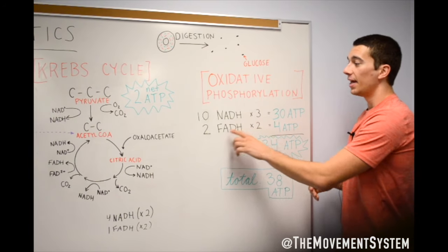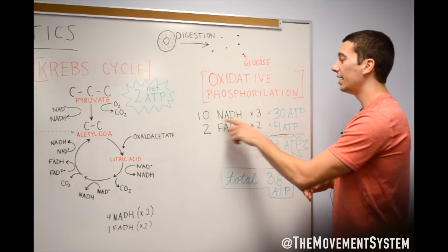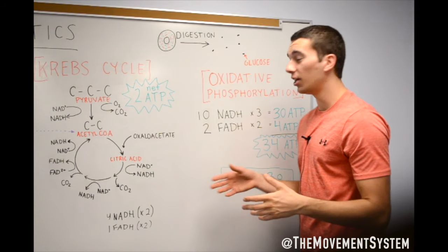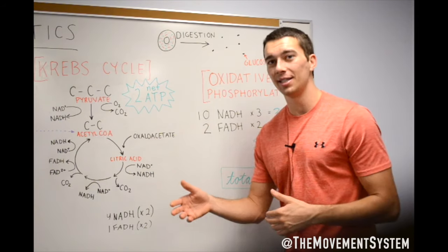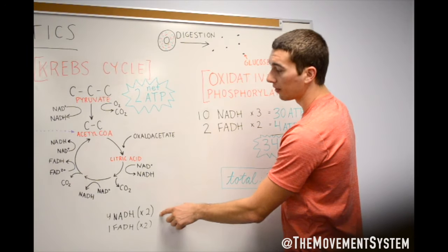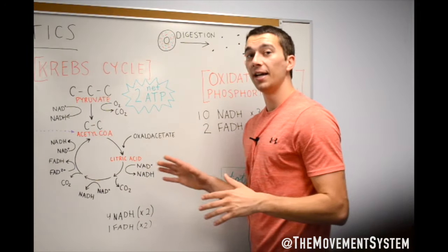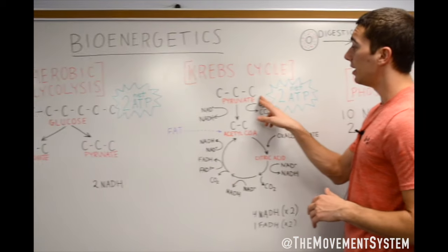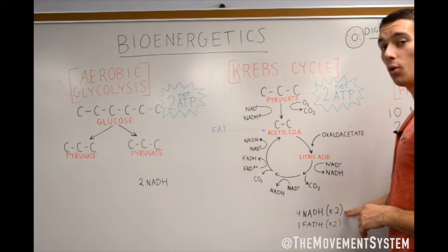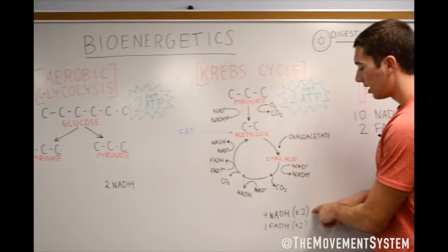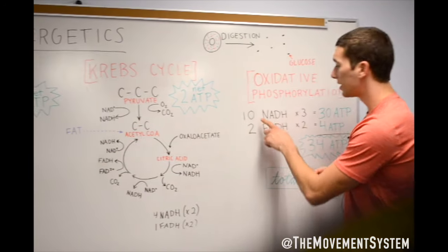So over here we're looking at, now we have 10 NADHs. This is where those NADHs, we're going to finally cash in on them and actually turn them into ATP. We had four NADHs from the Krebs cycle. We have two pyruvates, so each of those is going to be four NADHs. So four here, two times, that's going to get us eight.